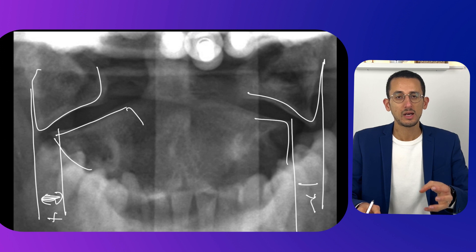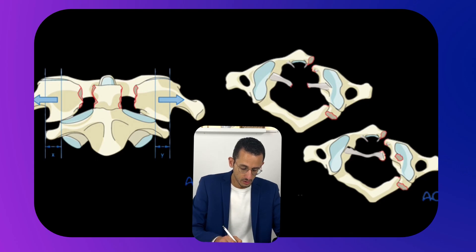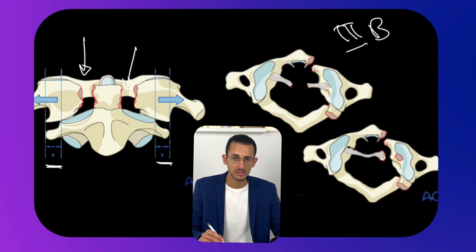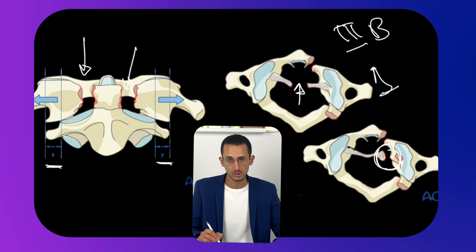If the combined overhang exceeds seven millimeters, this indicates disruption of the transverse atlantal ligament. This overhang is shown in the imaging where you can see the fracture of C1 and the C1-C2 overhang space. The Type 3b fracture has been further sub-classified by Decamin into two types: Type 3b1 where the transverse atlantal ligament is completely disrupted, and Type 3b2 where the ligament is intact but a bony fragment from C1 is displaced with the ligament. MRI can be used to assess ligamentous and soft tissue injury and any associated spinal cord injury.